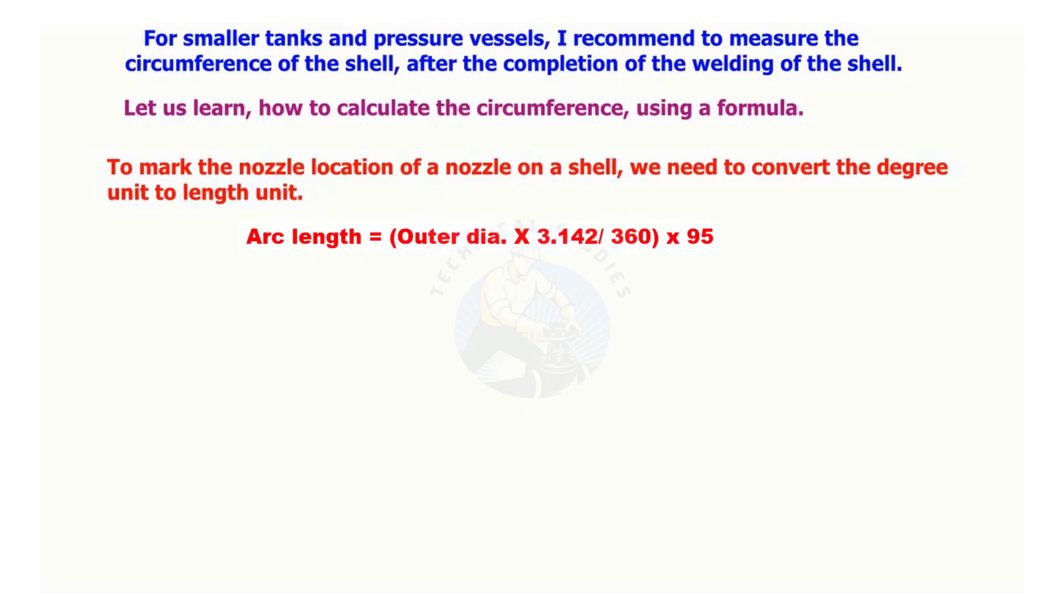The circumference of a shell is outer diameter times 3.142. Length of 1 degree is circumference divided by 360.